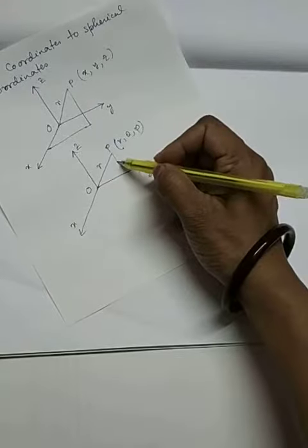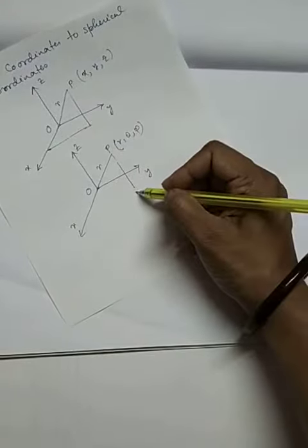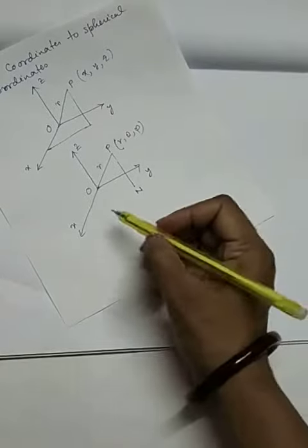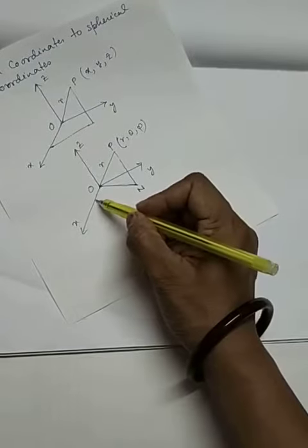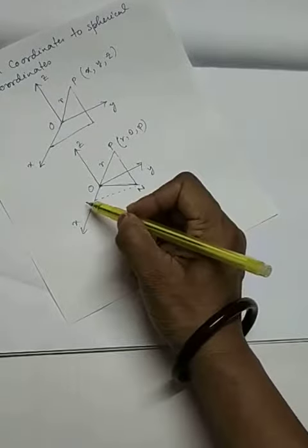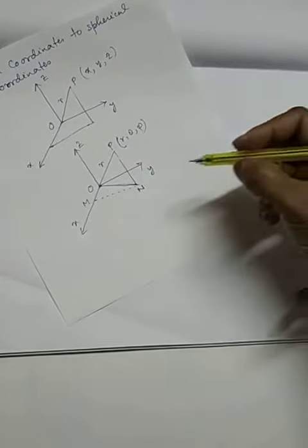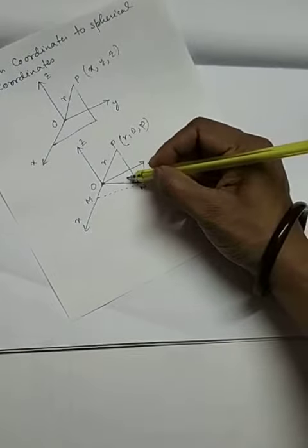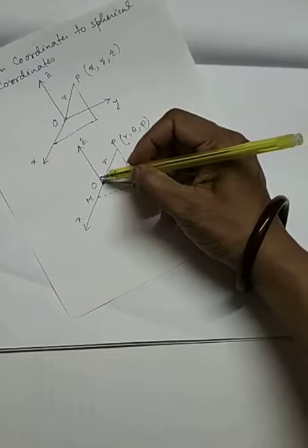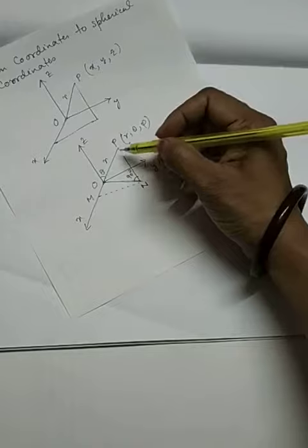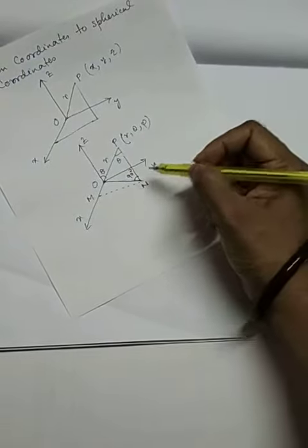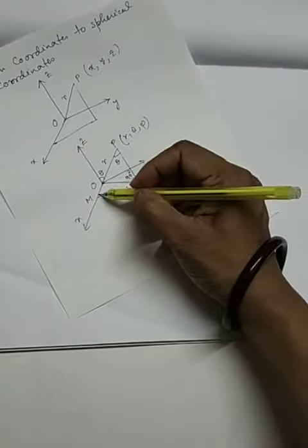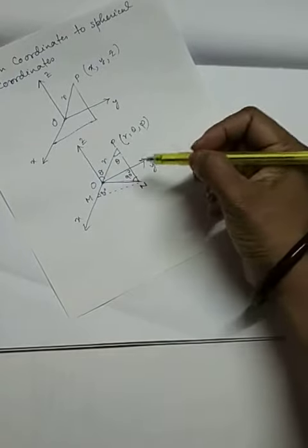Let us draw perpendicular Pn to the XY-plane. Join On, and then draw the perpendicular Nm to the X axis. Angle OnP is 90 degrees. Op makes angle theta with the Z axis. Angle Opn is also theta. Angle Omn is 90 degrees, and On makes angle phi with the X axis.